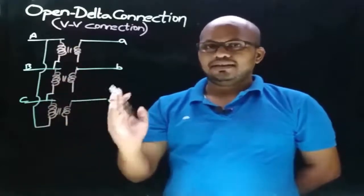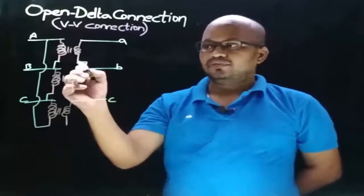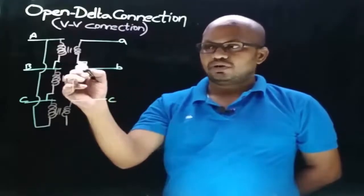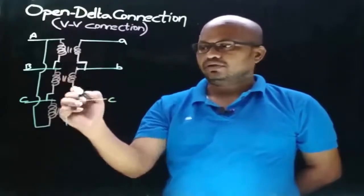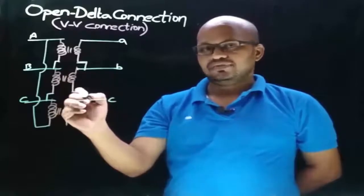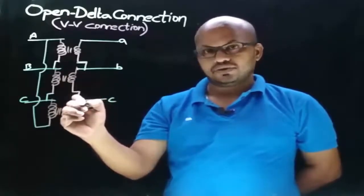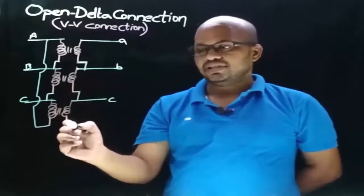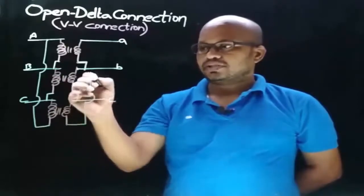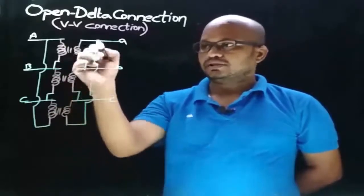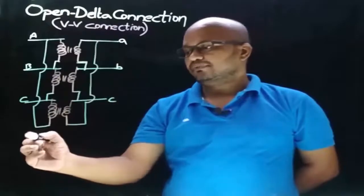Similarly, let's obtain delta connection on the secondary side. The finishing end of one coil is connected to the starting end of another coil. Here, this is the finishing end which is connected to the starting end of the other coil, and this is the finishing end which is connected to the starting end of the other coil.